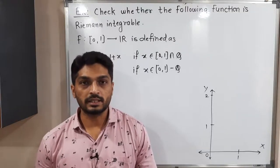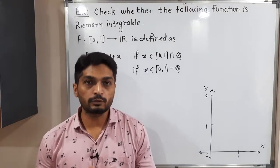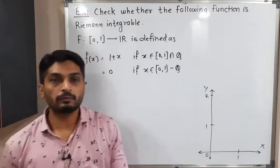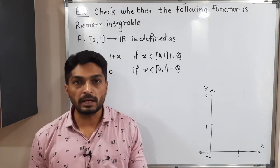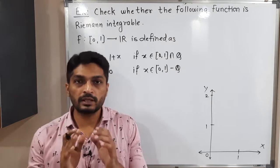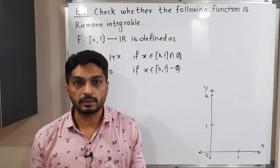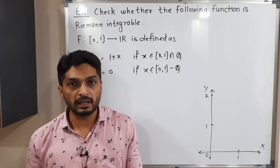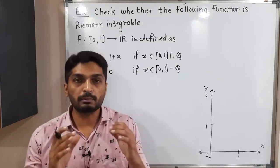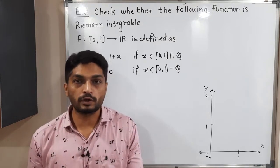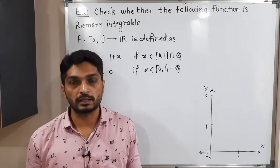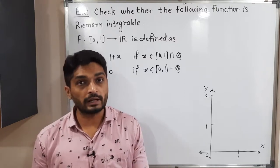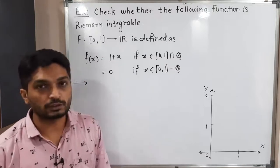Let us discuss this example. In this example we have this function which is defined on the closed interval [0,1] and we have to check whether this function is Riemann integrable or not. We have a very simple concept: if the upper integral is equal to the lower integral, we say the function is Riemann integrable, and if both of them are unequal, we say the function is not Riemann integrable.